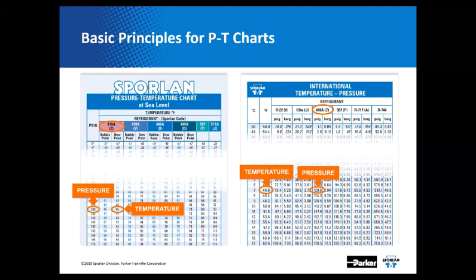You'll also notice that this PT chart has both a bubble point and a dew point. For 410A, which is fairly pure, it doesn't have significantly different bubble and dew points. But for a refrigerant like 448A, if you look two columns over — at 140 pounds — you would have a bubble point of 65°F and a dew point of 74°F. So if you're measuring superheat at the evaporator, you use 74 degrees; if you're calculating subcooling, you use 65 degrees. PT charts simply tell you the boiling and condensing points for refrigerants at specific pressures.